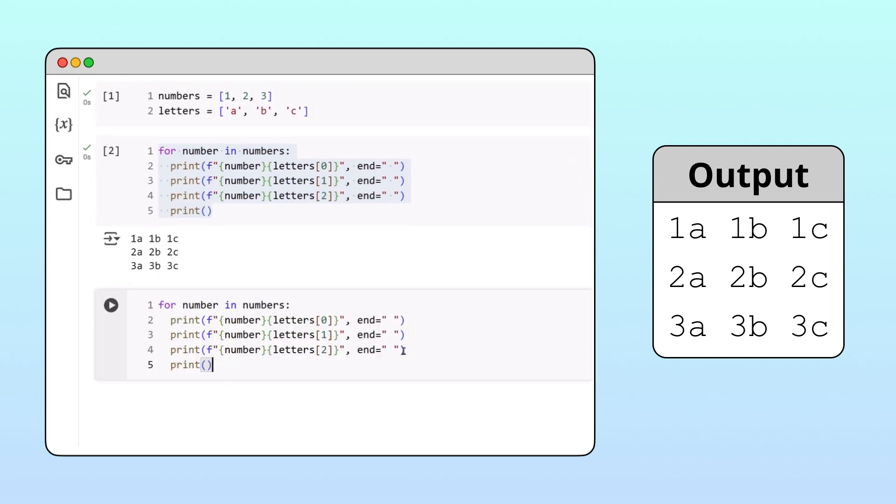We'll replace the three print statements with a for loop that iterates over the letters list. Inside this loop, we'll write a single print statement that outputs both the row number and column letter. Running the code, we get the same output as before.